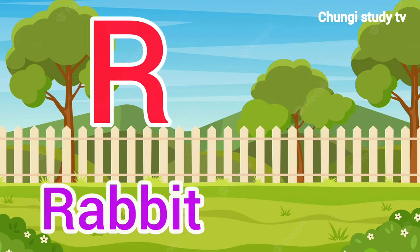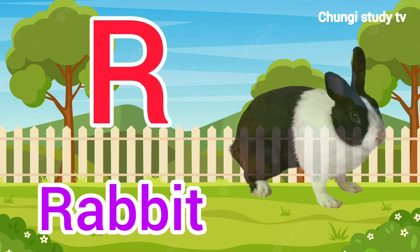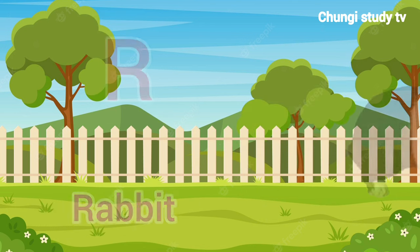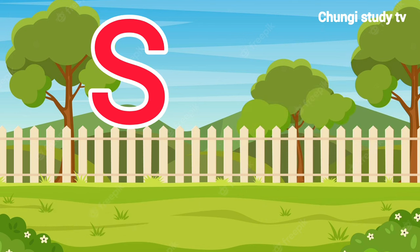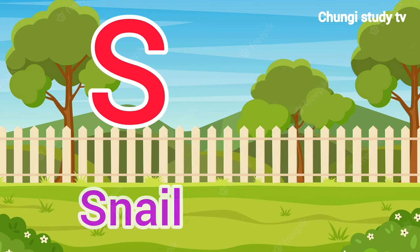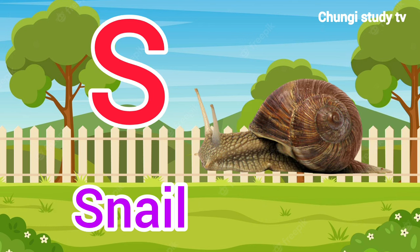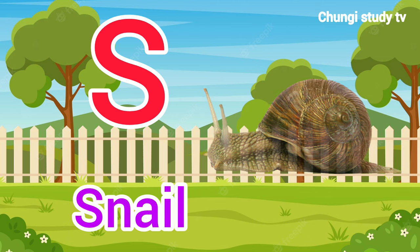R, R for Rabbit. Rabbit means Khargosh. S, S for Snail. Snail means Ghonga.